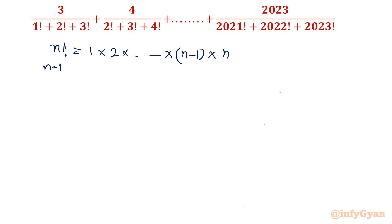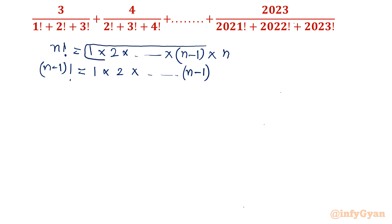Similarly I can write (n-1) factorial also. It will give us 1 × 2 × ... up to (n-1). So we can replace this product by (n-1) factorial. This is our recursive formula — use the previous result to find the current value, like mathematical induction. So n! = n × (n-1)!. This is the recursive general formula.